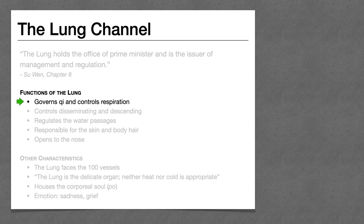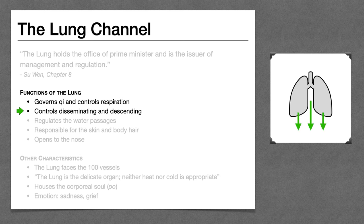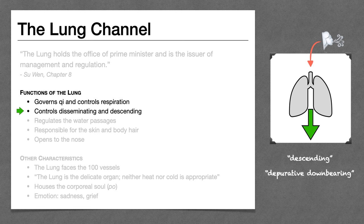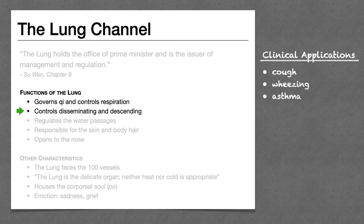This action of governing Qi and controlling respiration is closely related to the second function: the lung controls disseminating and descending. On one hand, the lung disseminates or diffuses Qi and fluids outward, spreading Qi and fluids to the skin and body surface. On the other hand, the lung has a strong downward direction. Unlike the spleen that raises the clear, the lung takes in the air we breathe and sends that clear Qi downward — that's what we mean by depurative downbearing. If the lung fails in its function of diffusion and depurative downbearing, that Qi can rebel upwards, giving us symptoms like cough, wheezing, asthma, and shortness of breath.